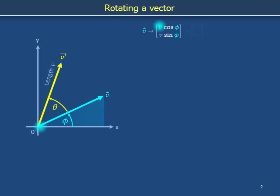Using the x and y axes as a coordinate grid, the components vx and vy of the original blue vector are v cos phi and v sin phi. Likewise, the components of yellow vector v' are v cos(phi + theta) and v sin(phi + theta).